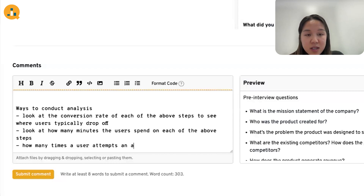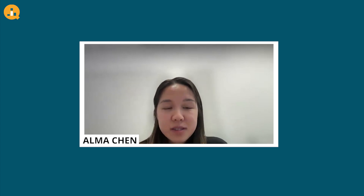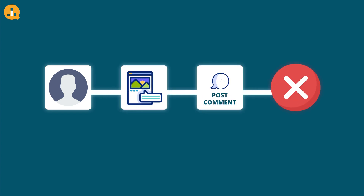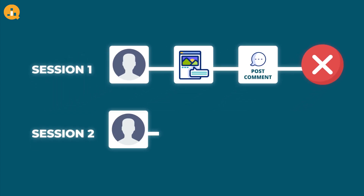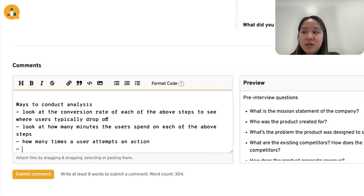Another approach is to see how many times a user attempts an action. For example, if a user has trouble commenting on a post but really wants to post the comment, they might attempt it across different sessions. If we see a user starts a session, navigates to a specific post, clicks the comments, but doesn't actually post — and then later in the day starts a different session, navigates to the same post, and this time successfully posts a comment — it could indicate that the commenting user flow is unintuitive, and we can improve the UI there.